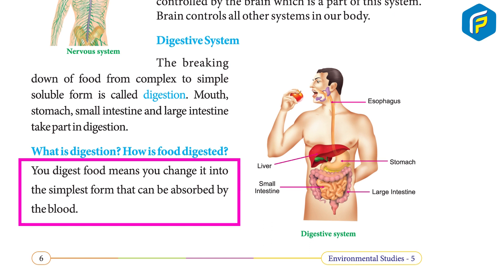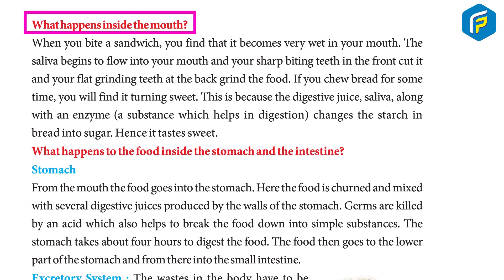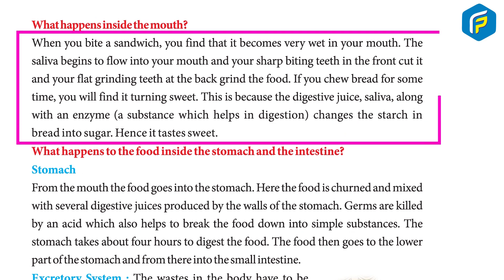What happens inside the mouth? When you bite a sandwich, it becomes very wet in your mouth — saliva begins to flow. Your sharp biting teeth at the front cut the food, and your flat grinding teeth at the back grind it. If you chew bread for some time, it turns sweet because saliva, along with an enzyme, changes the starch in bread into sugar.